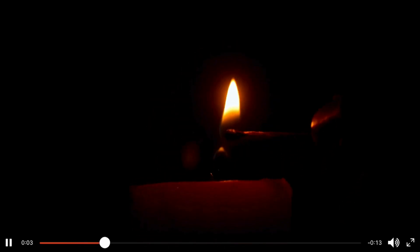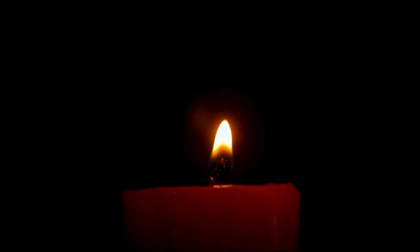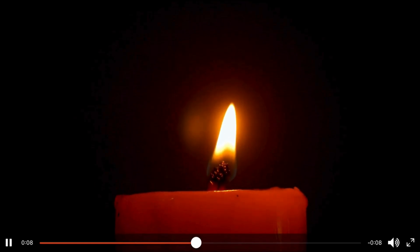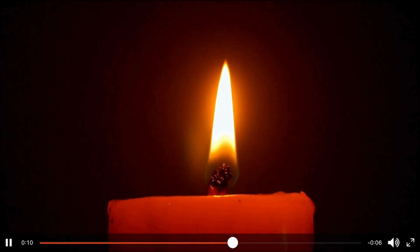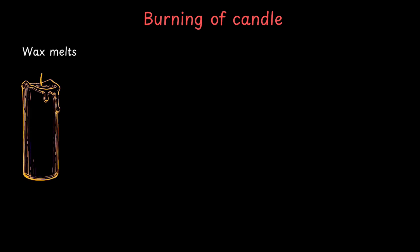What about lighting a candle? Is it a physical change or a chemical change? Pause and think for a while. What exactly happens when we light a candle? First, the wax melts. No new substances are formed. If the melted wax cools, it becomes solid wax again — totally reversible. So that's a physical change.